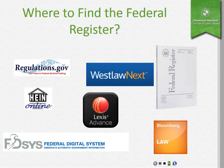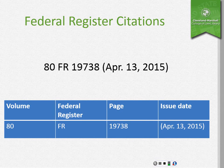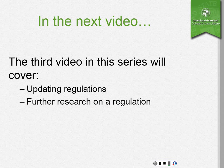You can find the Federal Register in lots of places. As you can see on your screen, my best suggestion for a free website is regulations.gov, to get both proposed and final regulations. Here's what a Federal Register citation looks like — the first number is the volume, FR stands for Federal Register, the second number is the page, and then finally the issue date. In our next video in this series, we'll cover updating regulations and further research on a regulation.